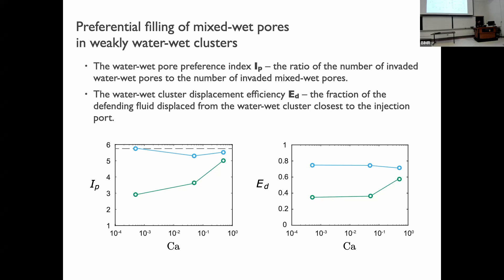As we increase the capillary number, the behavior between strongly water-wet clusters at 30° and weakly water-wet clusters at 60° converges at high capillary numbers. Since capillary number measures the relative importance of viscous to capillary forces, this tells us that capillary forces are driving the difference between the two systems.